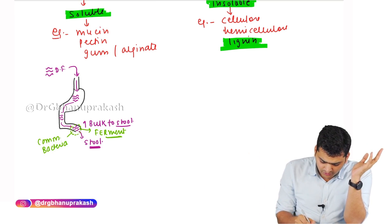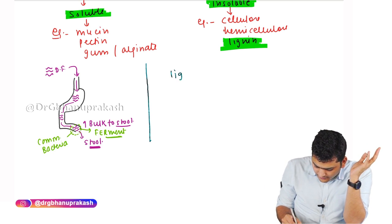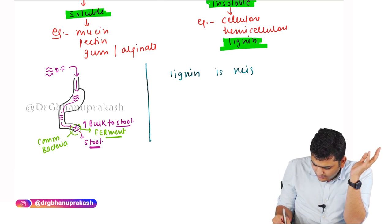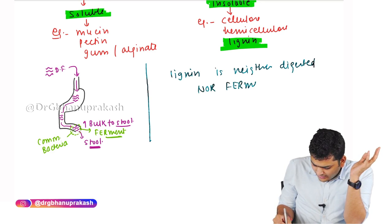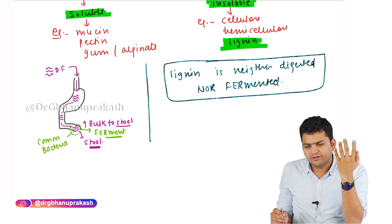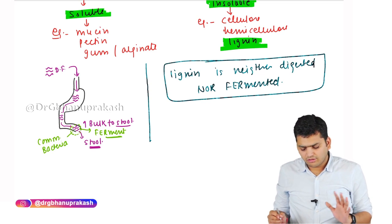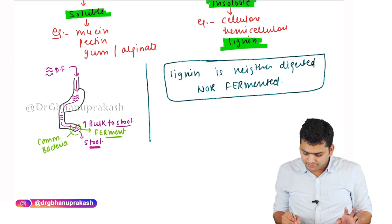There is one dietary fiber that is neither digested nor fermented — the answer is lignin. Lignin will not be digested and will not be fermented. All other dietary fibers are not digested, but they can be fermented — except lignin.